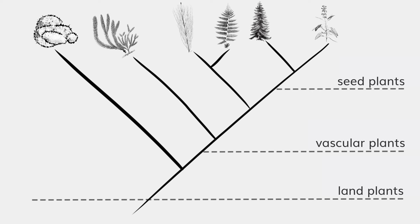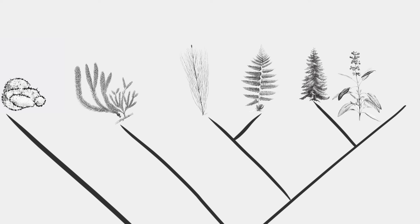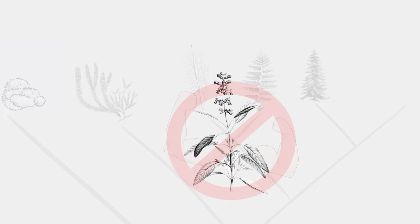Lastly, this tree allows us to note the emergence of flowers, which characterize all flowering plants. To clarify, this tree certainly doesn't mean that flowering plants are more evolved than other plants — it all depends on the context. So how can we go back in time to reconstruct plant evolution?